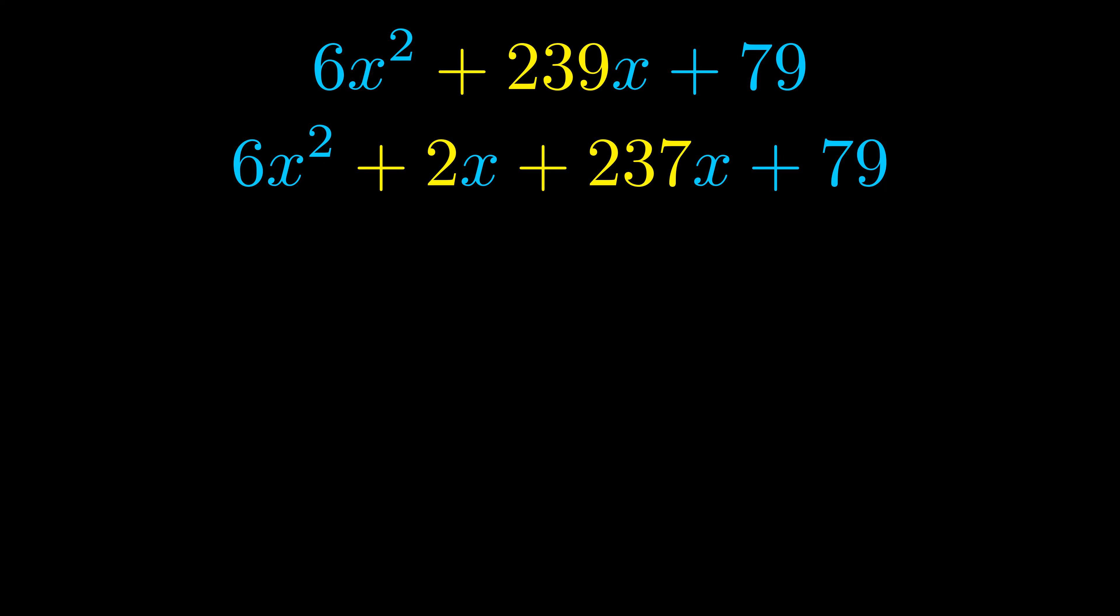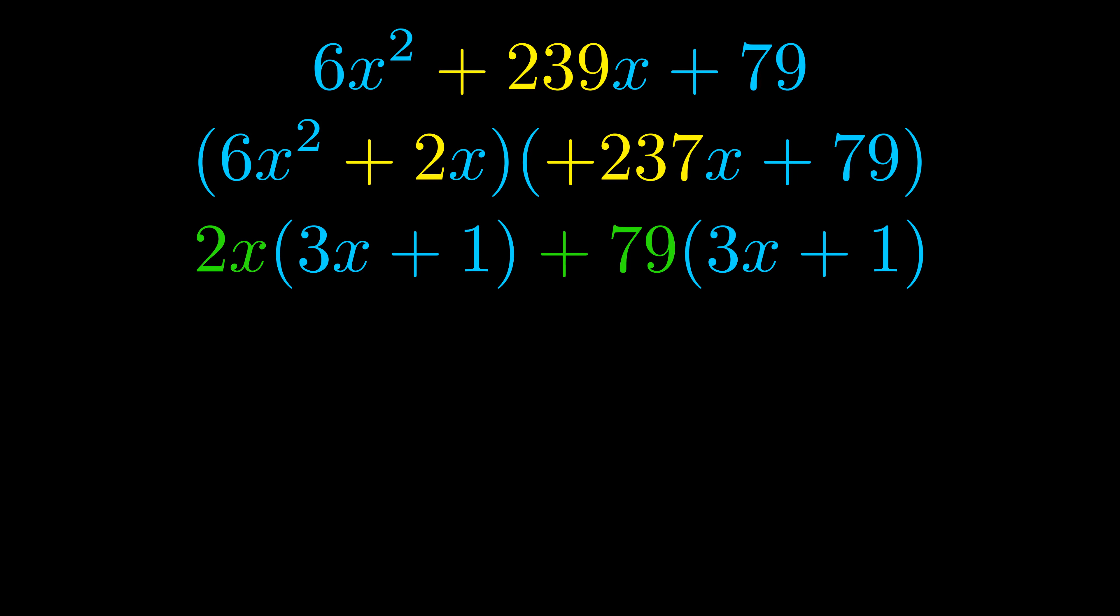Once we've done this we go ahead and we put parentheses around the first term and the last term and we do that so that we can take the greatest common factor out of both terms. We can see the greatest common factor is now outside in green. Notice also how what remains inside of the parentheses is the same in both cases. The blue values are the same.